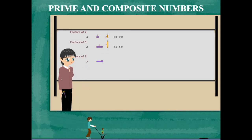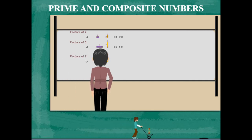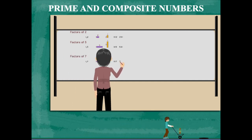Similarly, the factors of 7 are 7 and 1. And this too is a prime number.